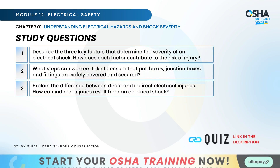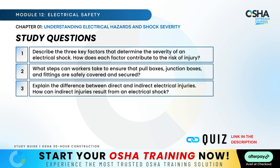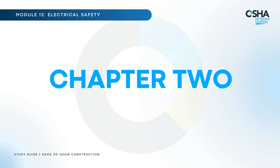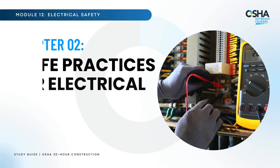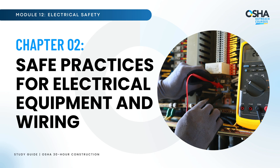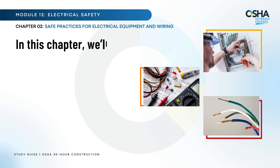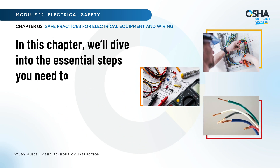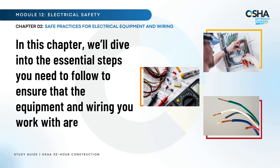Now, let's test your understanding. Take a moment to think about these questions and discuss them with your colleagues. Let's move to Chapter 2: Safe Practices for Electrical Equipment and Wiring. In this chapter, we'll dive into the essential steps you need to follow to ensure that the equipment and wiring you work with are safe and reliable.